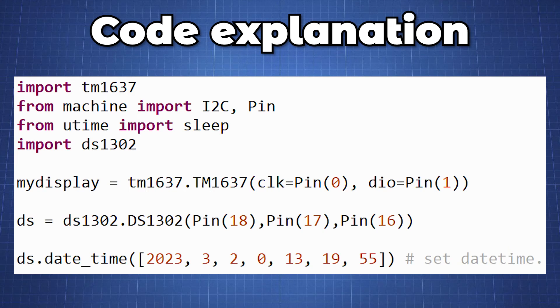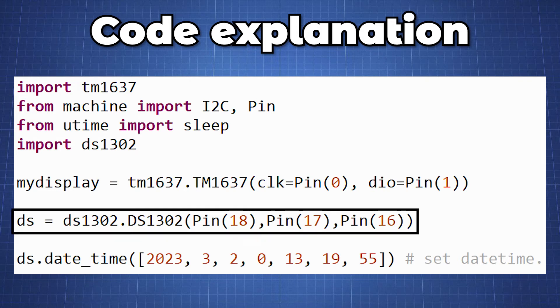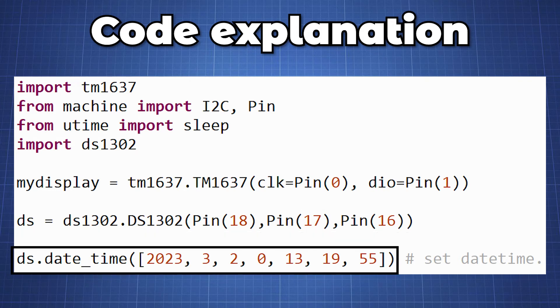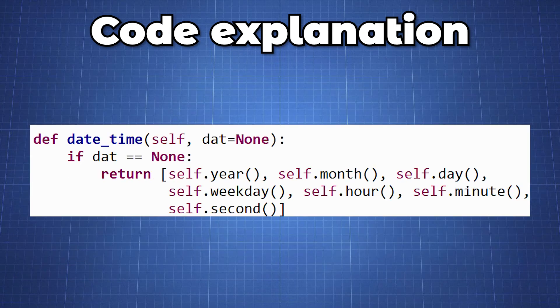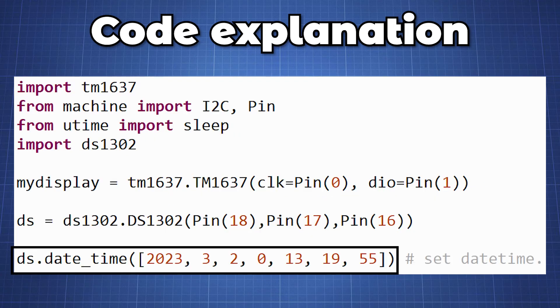In this block of code we import the ds1302 library and then create a variable to initialize the clock by setting it equal to ds. We can then set a date time which takes the following parameters, but in this demonstration we will focus on showing the hours and minutes so we initialize our starting hour and minutes.